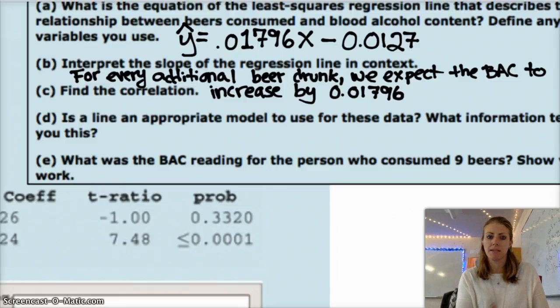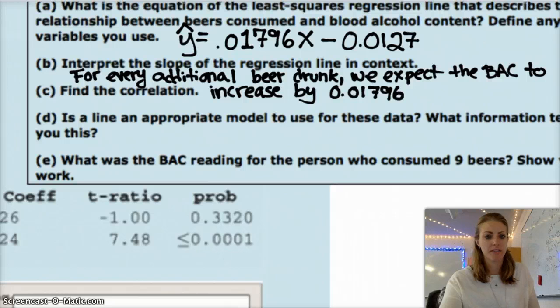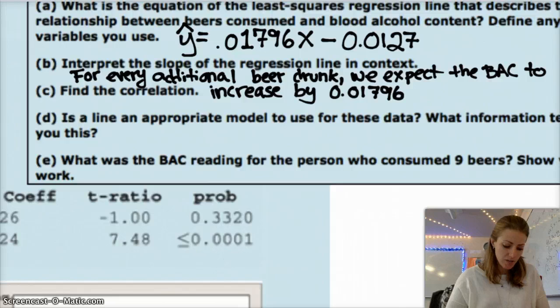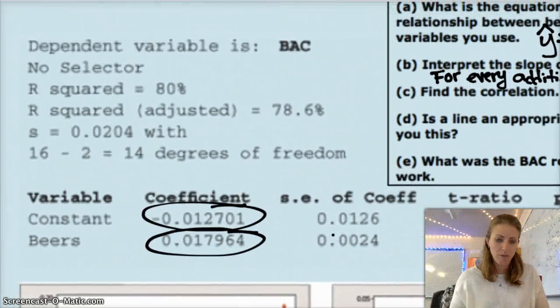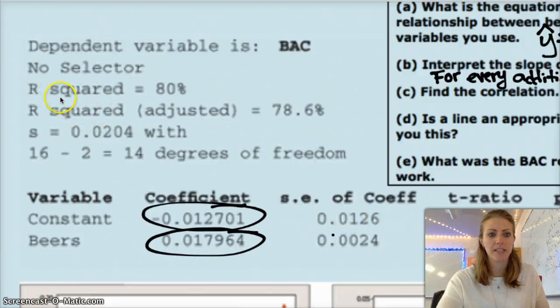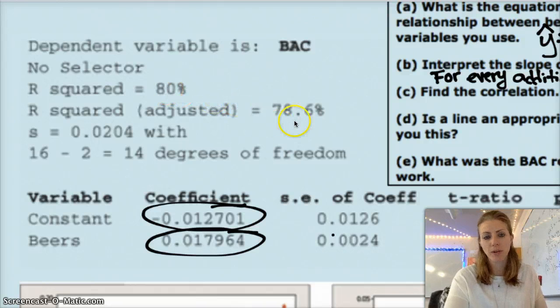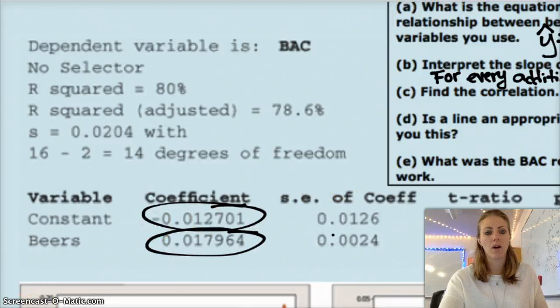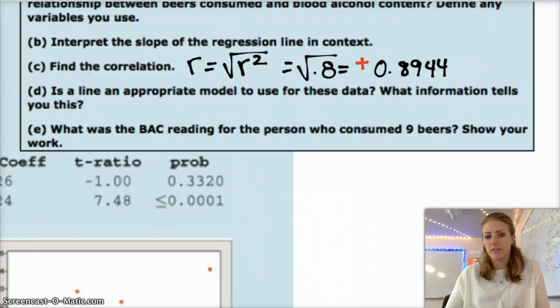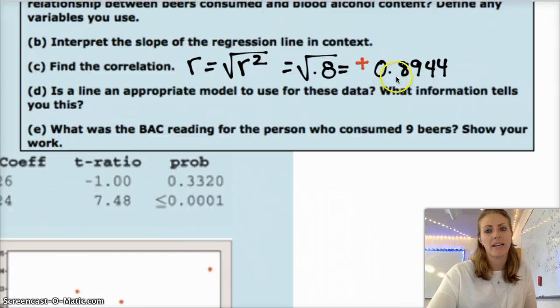So there's your interpretation of the slope of the regression line. For every additional beer drunk, we expect the BAC to increase by 0.01796. Finding the correlation means you have to go look at the computer output and look for r-squared. So in this case, r-squared is 80% or 0.8. So I need to take the square root of that to get my r-value, and I have to choose the sign. Is it positive or negative? So r is the square root of r-squared, which is the square root of 0.8, which you get is about 0.8944.